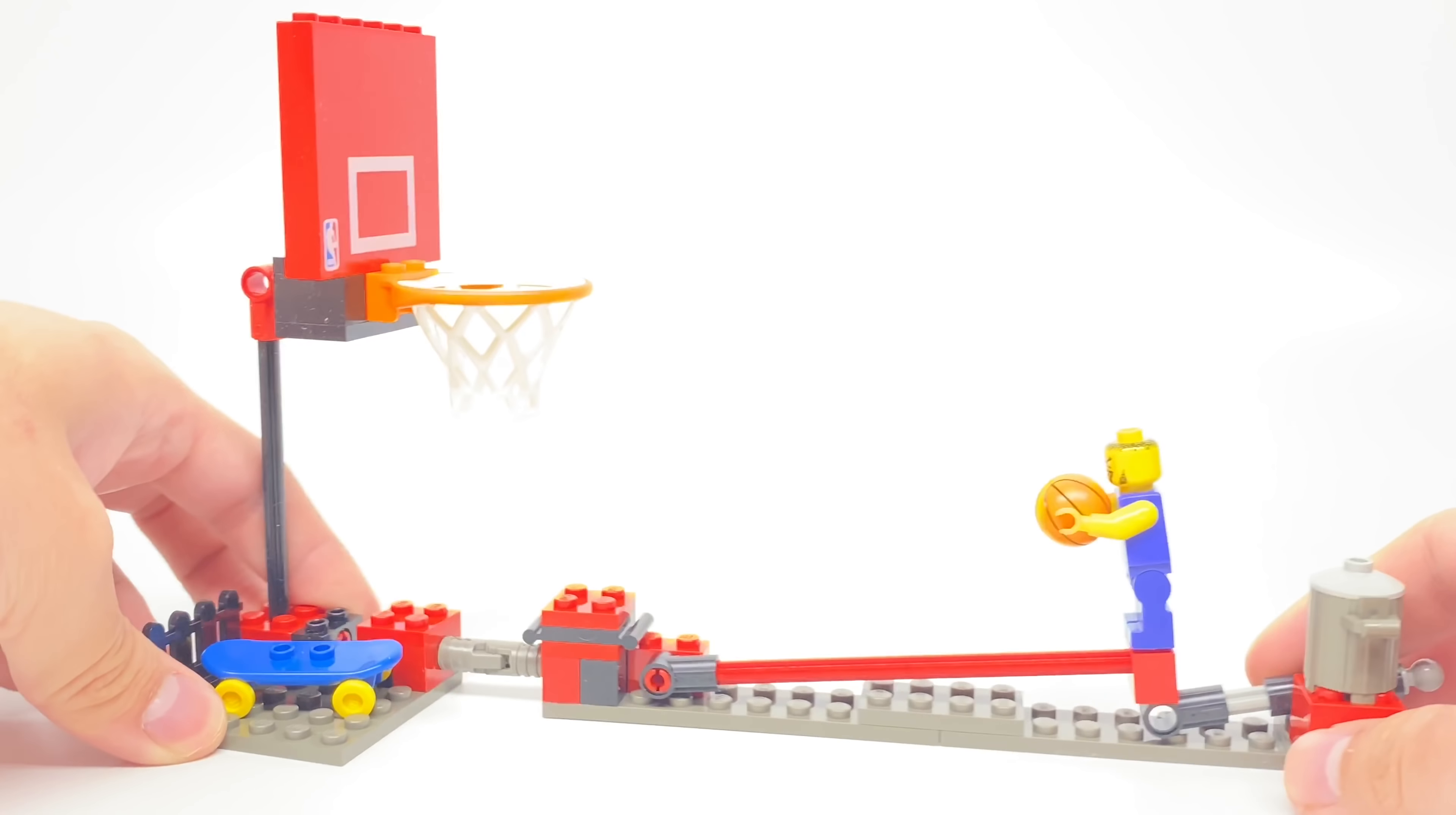Either way, this set has some really rare pieces, like the skateboard piece's wheels in yellow. That just does not come in too many sets in that color. And then the fence in black. I think that came in like one other set in that color. And at the top right here, there's a really nice printed panel with the NBA logo on it. And of course, that basketball hoop piece, or I guess set of pieces.